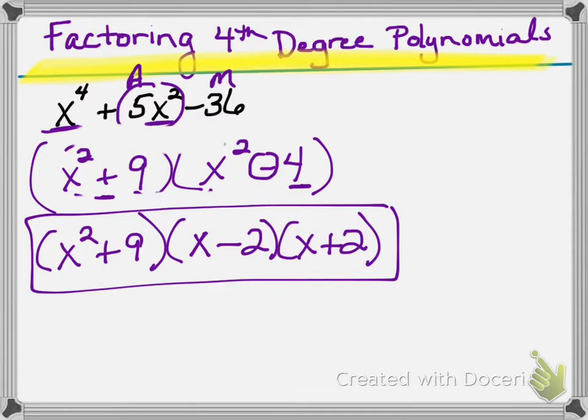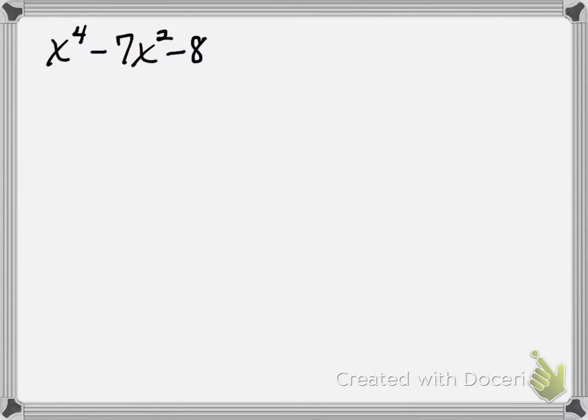We want to factor each fourth degree trinomial completely. It's using the same rules we have before; we just might have to take it an extra step or two at the end. In the second example, I have x to the fourth minus 7x squared minus 8. I'm looking for two numbers that multiply to give me negative 8 and add to give me negative 7.